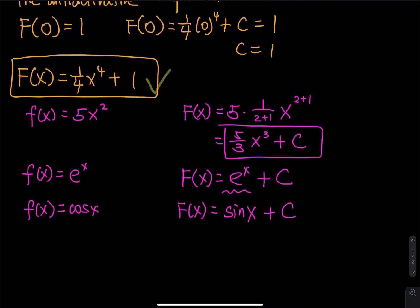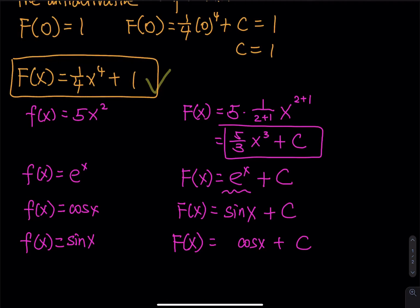Let's do one more. f(x) = sin(x). What is the antiderivative? Is it cosine(x) plus C? The answer is no. The derivative of cosine equals negative sine. Look at f(x) — there is no negative in front of the sine. So there must be a negative in there. When you take the derivative of negative cosine, that generates a negative, and the negative times negative becomes positive sine. So the antiderivative of sin(x) is negative cosine(x) plus C.